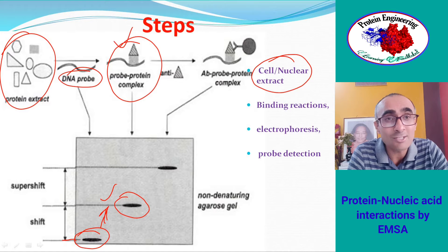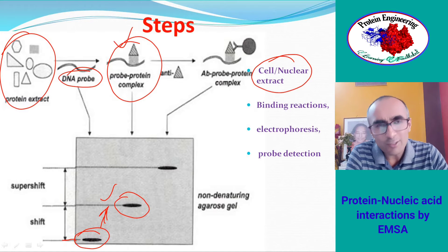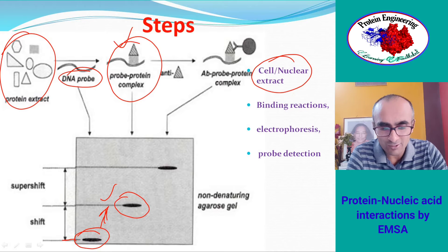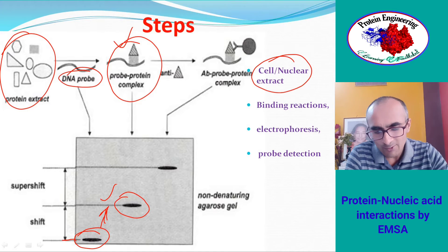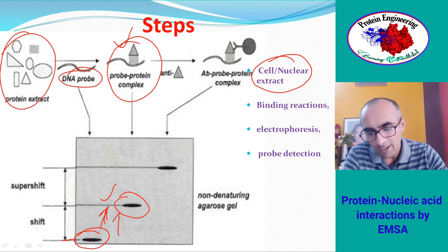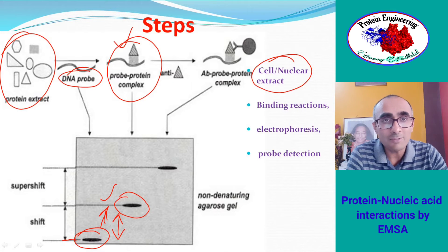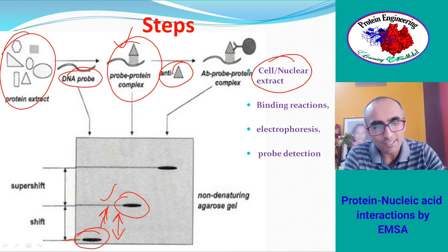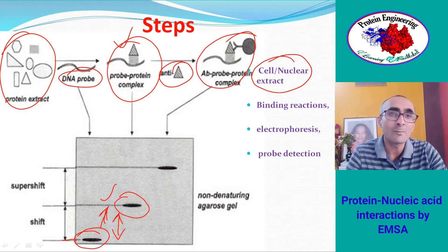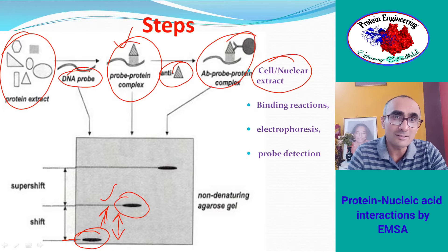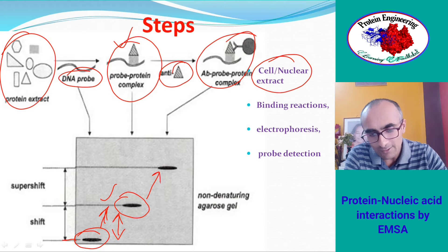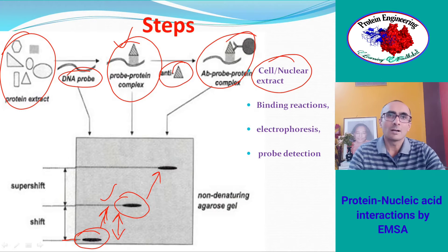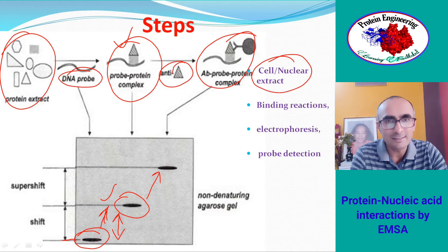This protein can also be identified using protein identification methods. Sometimes, when the shift is not very remarkable, antibodies are also added to confirm the result. An antibody against the protein which may be binding to the probe is added — an anti-protein antibody. This causes the complex molecule to become much larger, resulting in a further shift. This further shift is called a supershift — meaning the antibody is binding to the protein-DNA complex, yielding a very high molecular weight complex.